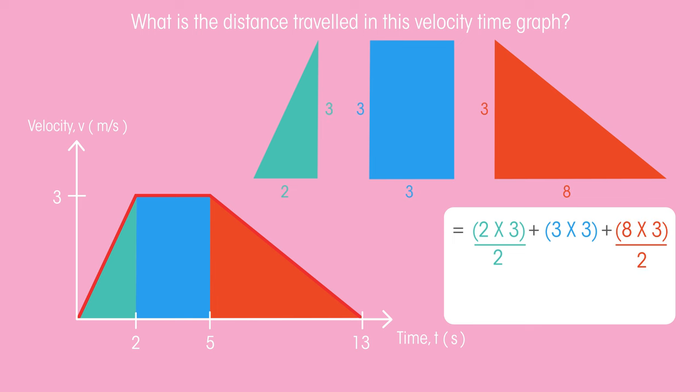This means that for the journey shown by the velocity time graph, the object travelled a total distance of 24 metres. When doing these calculations, just be sure to check the units that you're given, because this will affect what unit you will give in your answer for the total distance.